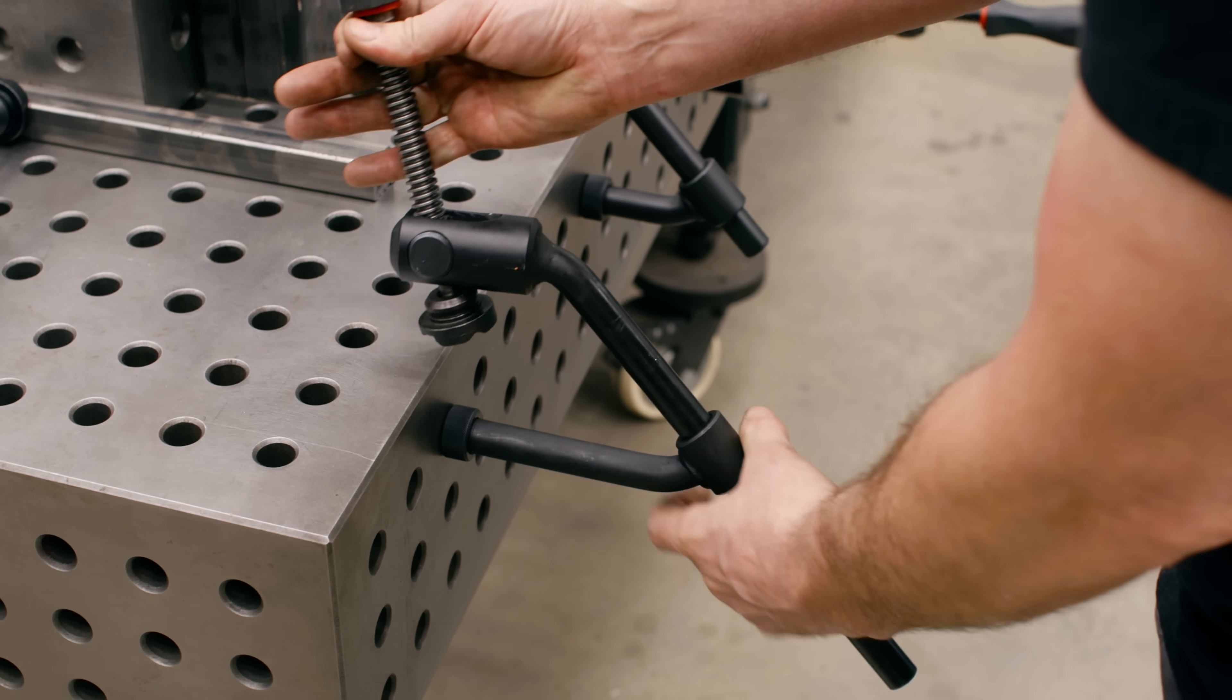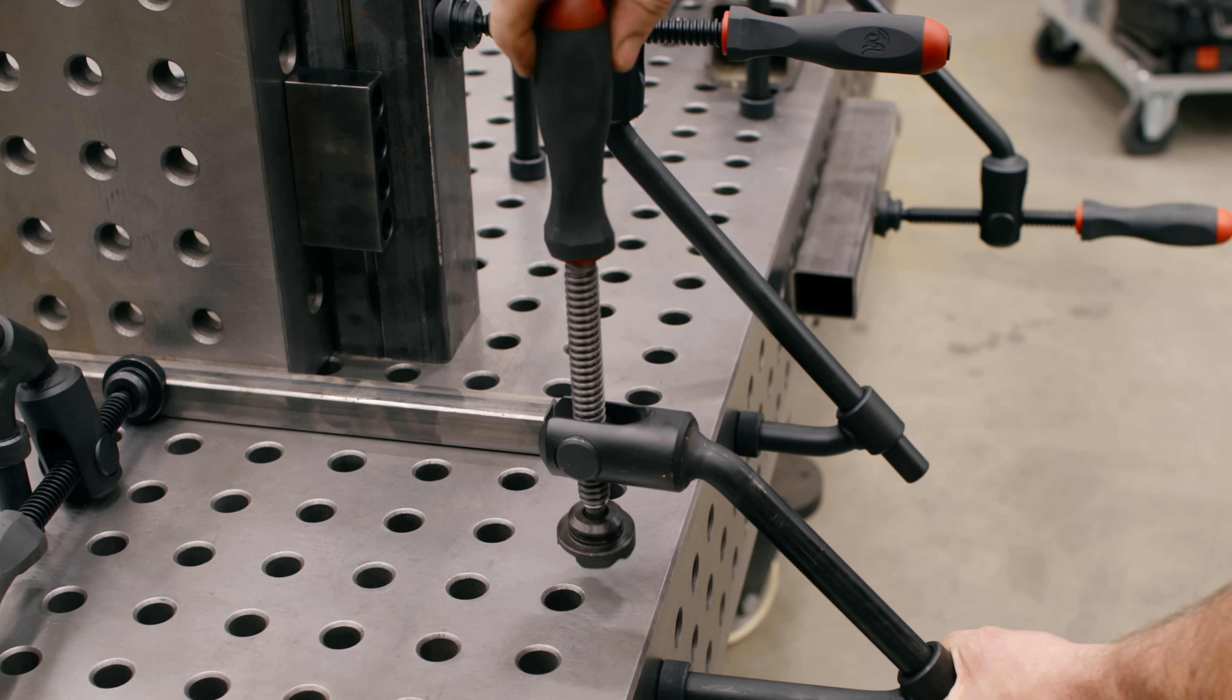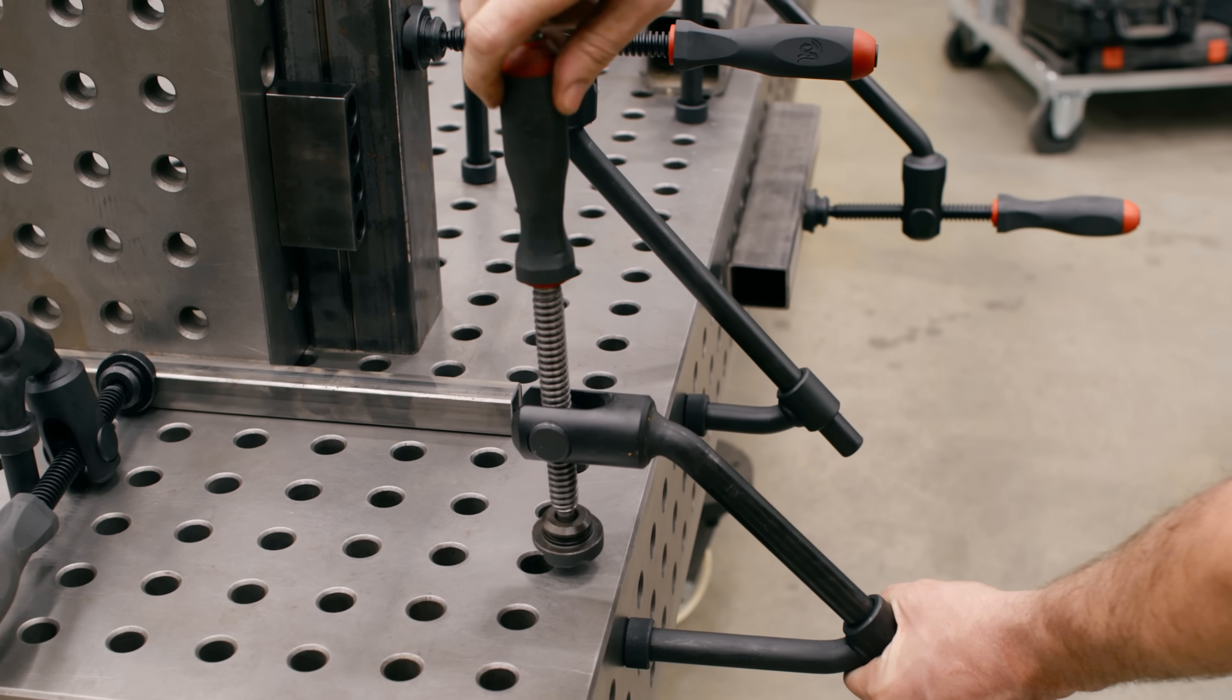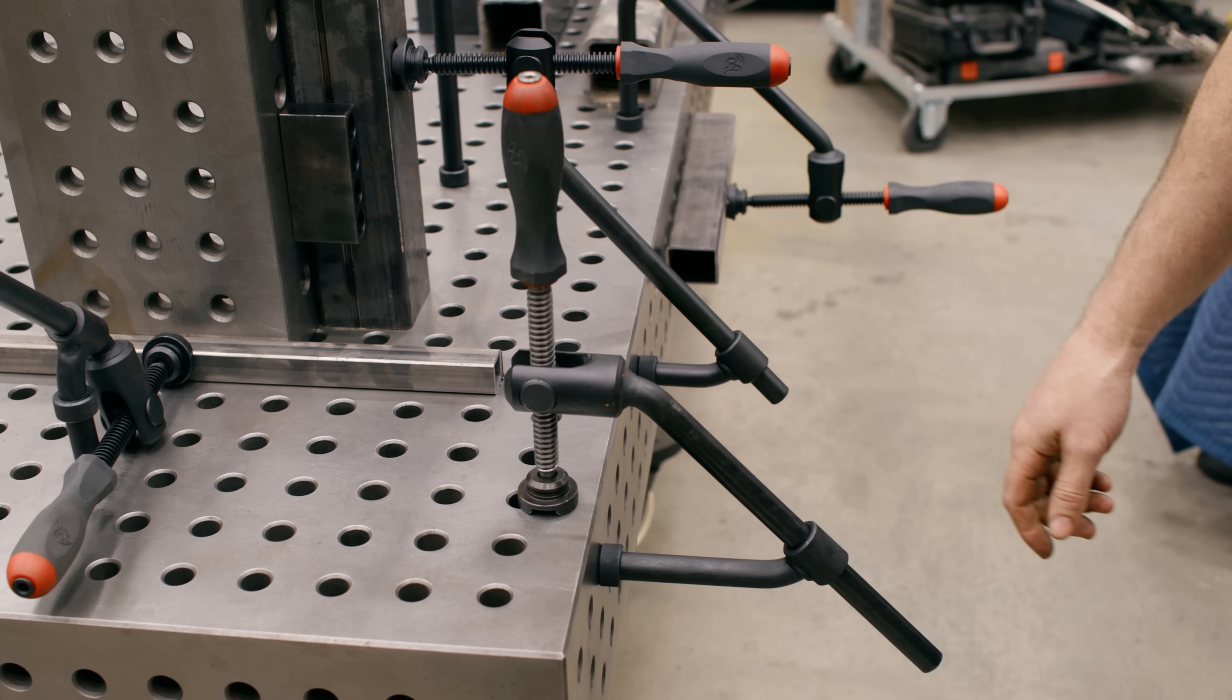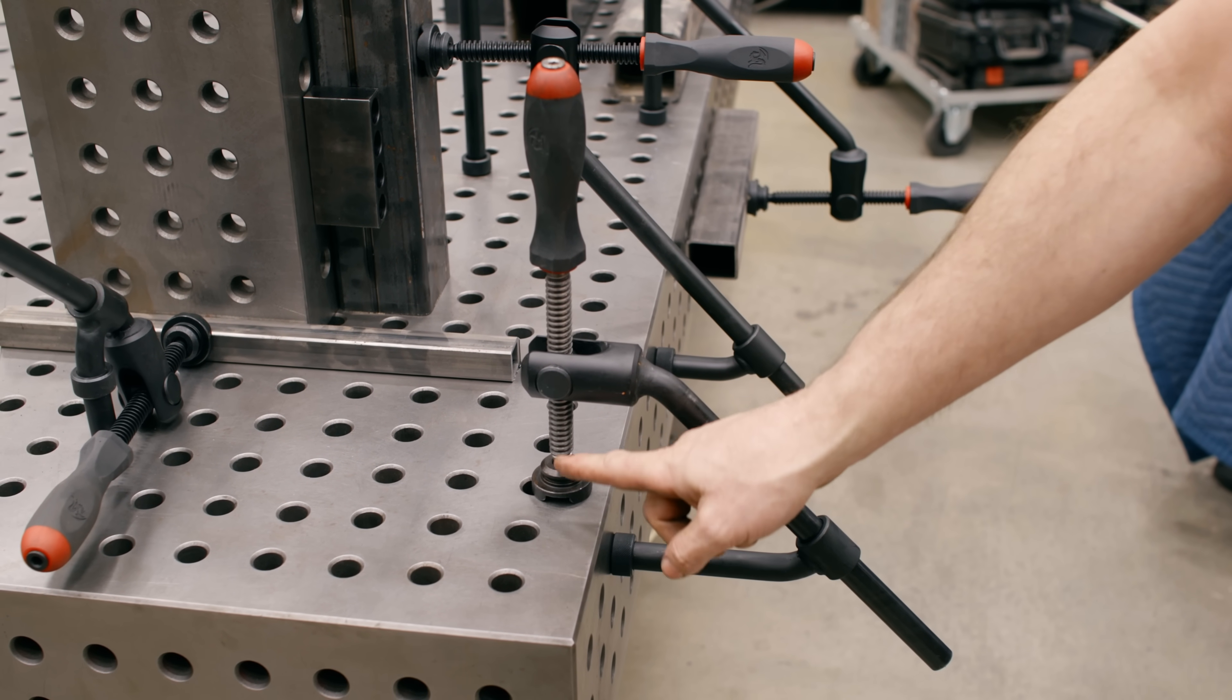Pop the foot back on and now you can clamp right here on the edge of the table. This is really nice if you have a small table with some sidewalls on it. You can utilize the space a little better. How slick is that?